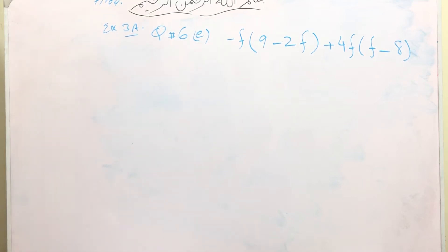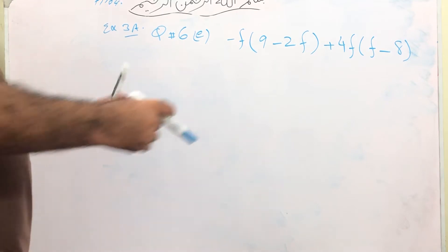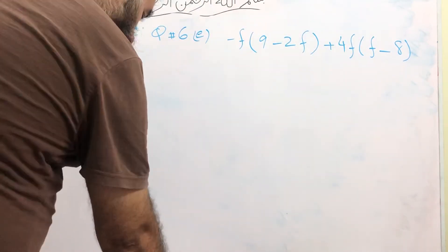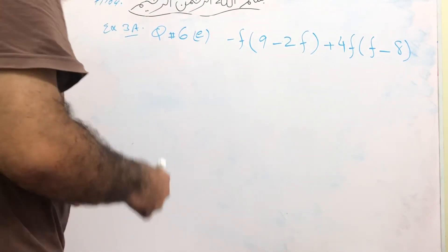Bismillahirrahmanirrahim. Now we will be doing question number 6 part e. This is exercise 3a. This is the given expression. Expand and simplify each of the following expressions.